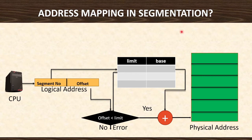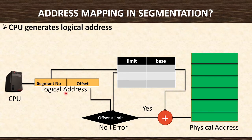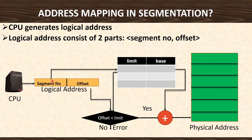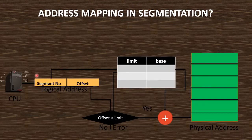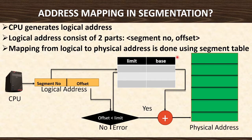Now we will see how address mapping is done in segmentation. When the program is about to execute, the CPU generates a logical address. This logical address consists of two parts: segment number and offset. For every program divided into segments, each segment is given a number — segment 1, segment 2, segment 3, segment 4, segment 5. That segment number is put in the logical address, and the offset is the actual byte value which the CPU wants to execute. Mapping from logical to physical address is done using the segment table, which is a data structure used by the memory management unit to convert the logical address into the actual physical address — the address of memory.